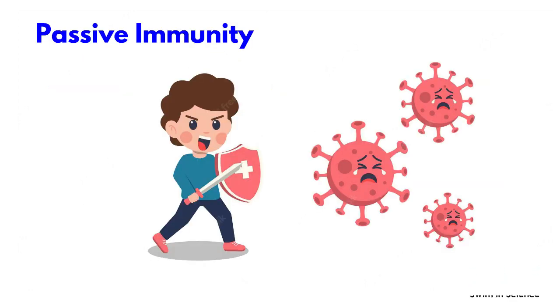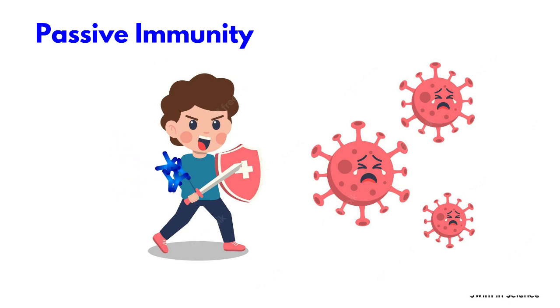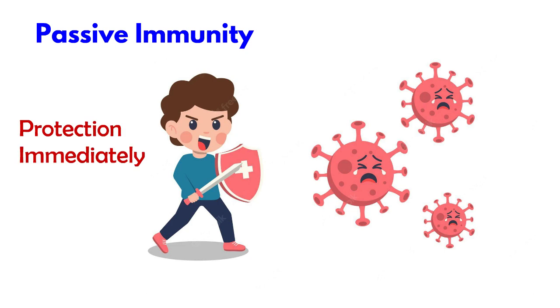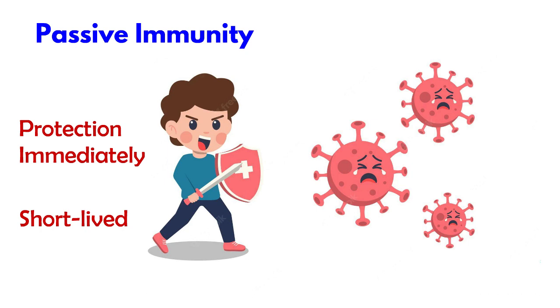Passive immunity is defined as the protection from a disease provided by antibodies created outside of the individual's body. Passive immunity provides protection immediately. However, it is short-lived, as the recipient cannot replenish the antibodies continuously.